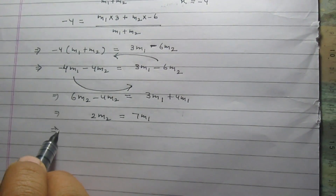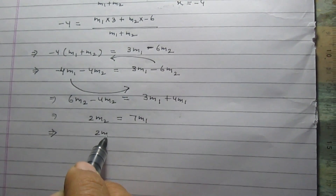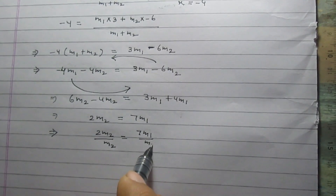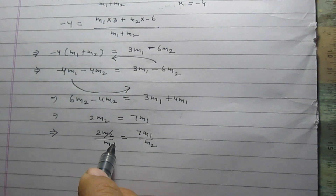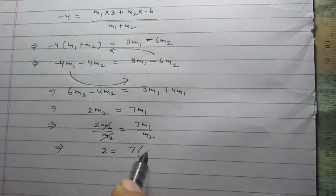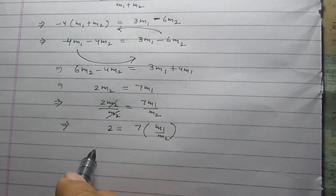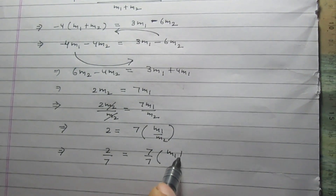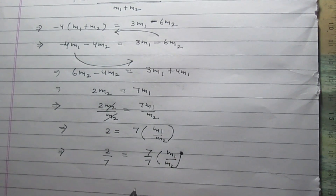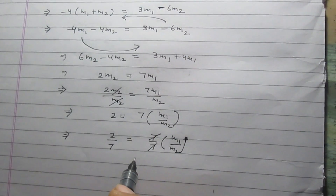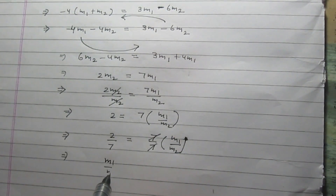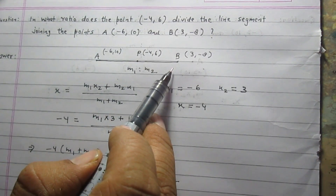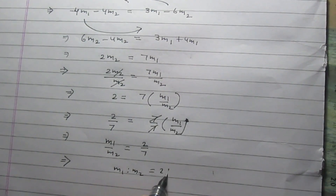Now, let us divide both sides by M2. We get 2 M2 upon M2 is equal to 7 M1 upon M2. M2 in the numerator cancels with M2 in the denominator, giving us 2 is equal to 7 times M1 upon M2. Dividing both sides by 7, we get 2 upon 7 is equal to M1 upon M2. So finally, M1 upon M2 is equal to 2 upon 7, which means point P is dividing the line segment AB in the ratio 2 is to 7.